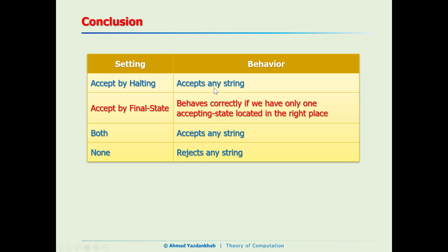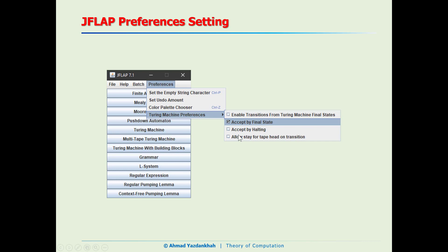So here is our conclusion: 'accept by halting' accepts any string because the machine just halts and accepts — that's not good for us. 'Accept by final state' is what we like and is consistent with our expectations. Checking both options also accepts any string, and checking neither rejects every string. So we will definitely go with accept by final state.